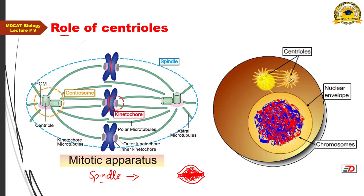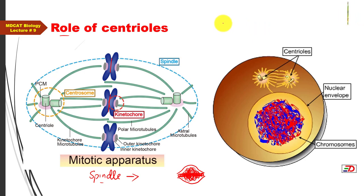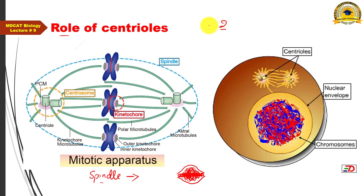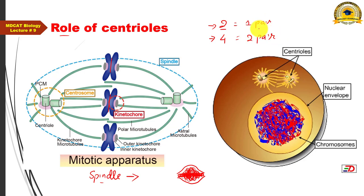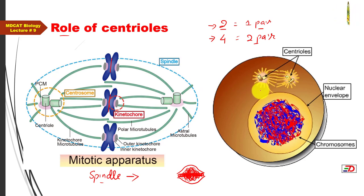Regarding the number of centrioles: in general, a cell has 2 centrioles. In a non-dividing cell, there are 2 centrioles (1 pair), but in a dividing cell, there are 4 centrioles (2 pairs). Be careful in MCQs — if the option uses the word 'pair,' then 2 centrioles = 1 pair and 4 centrioles = 2 pairs.